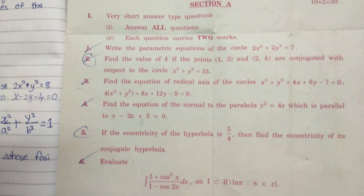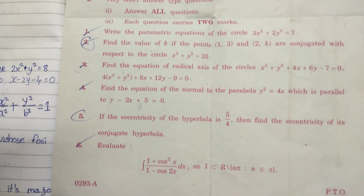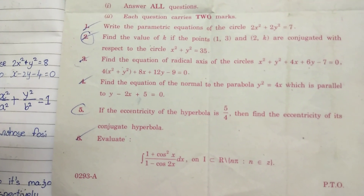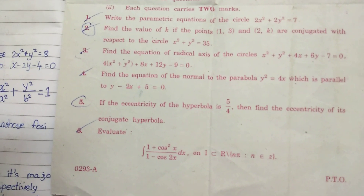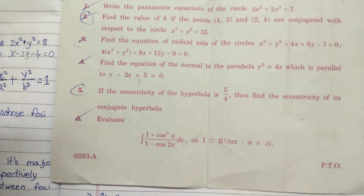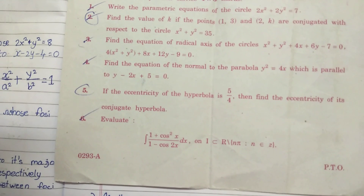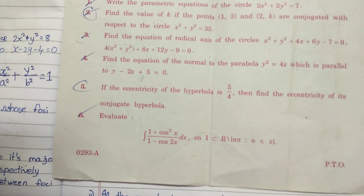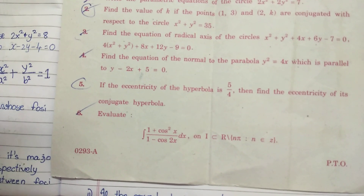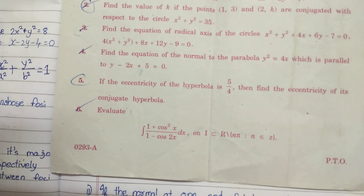Find the equation of the radical axis of the circle. Third one. Fourth one is normal — parabola. First one is 7 plus 2. Next one is hyperbola. This is the ellipse. Only foci.